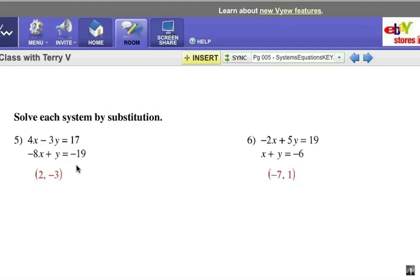Now in my answer key, notice how the answer is written. It's written as an ordered pair. I've got number 5, x was positive 2 and y was negative 3. So I write it as this ordered pair, 2 comma negative 3. And at number 6, I had x as negative 7, y as 1. And I write it as that ordered pair. That's where the lines of these two equation graphs would meet.